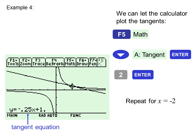We repeat the process for x equals negative 2, and it draws the second tangent line at x equals negative 2.